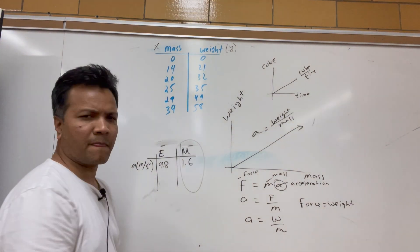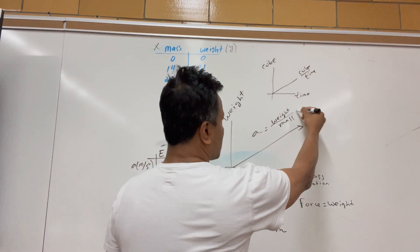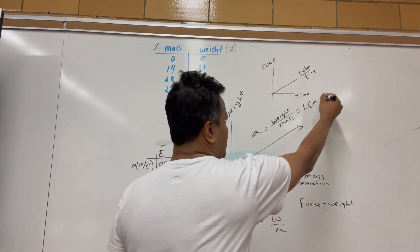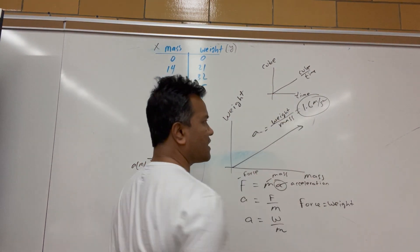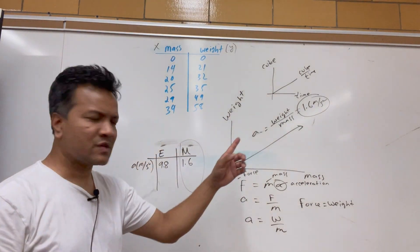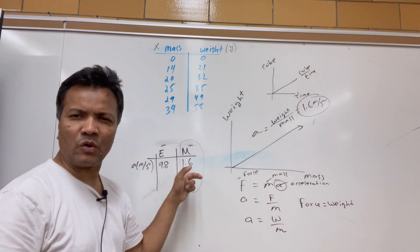The slope is 1.6, so the acceleration is 1.6 m/s² — that's definitely not Earth. That's close to the Moon, so we are on the Moon.